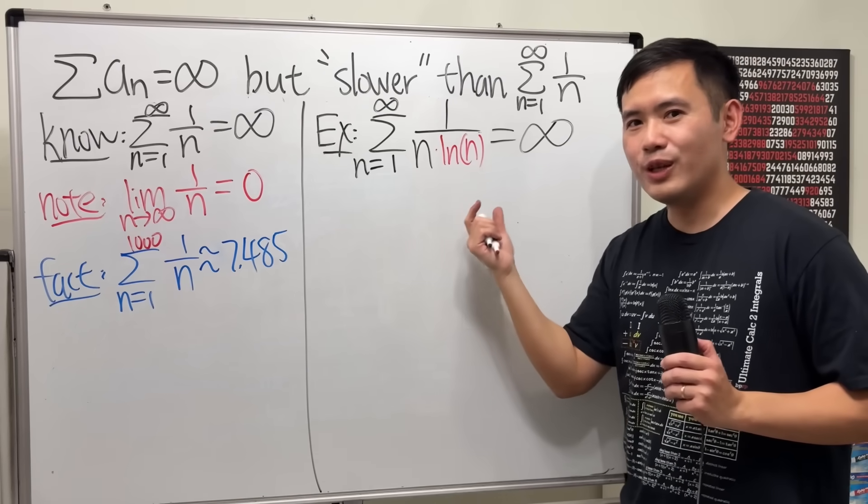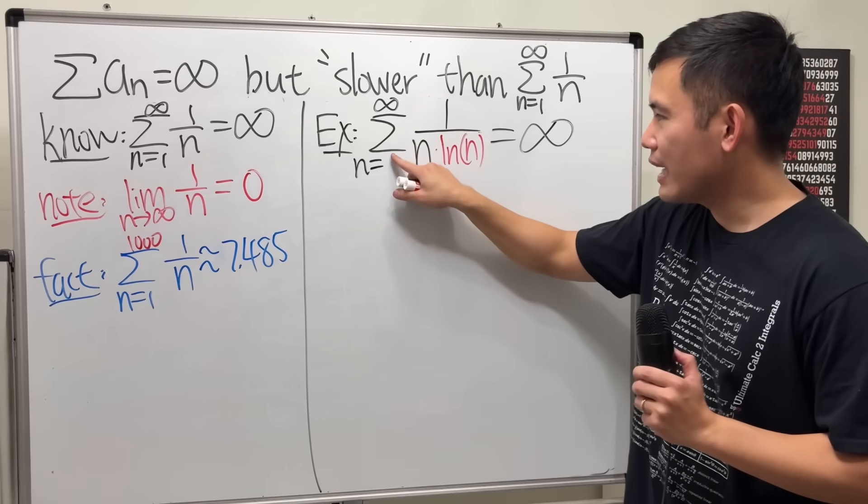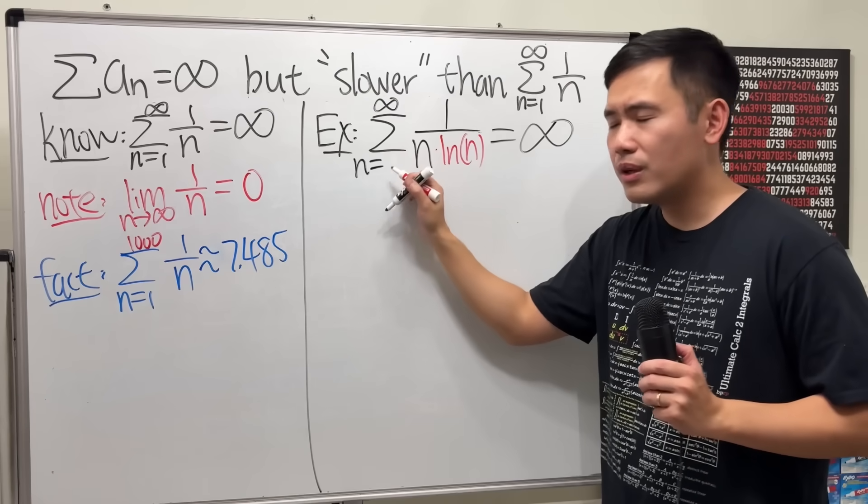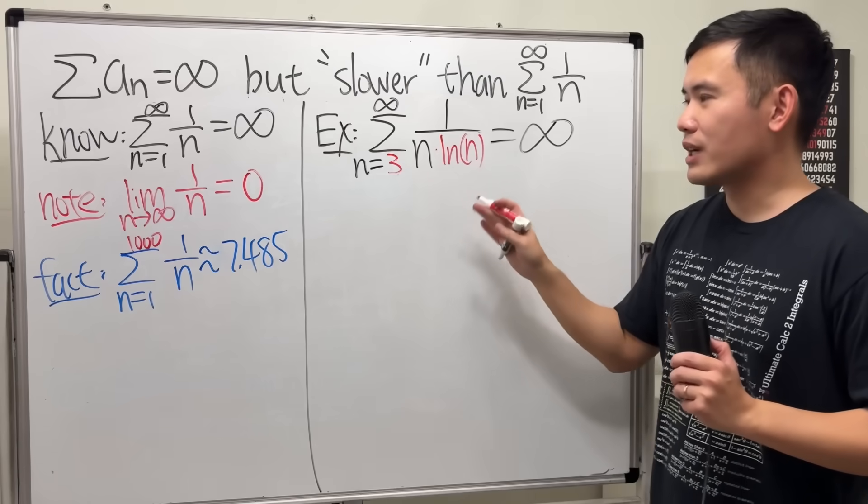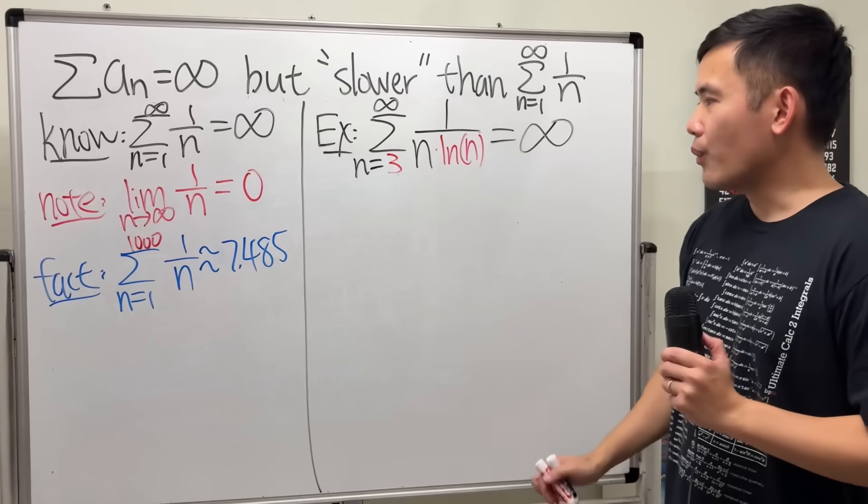But it's harder for us to do the integral test if we have ln n plus 1 right here. So I'm going to avoid that by making the n starting at not 2 but rather 3 because it's much better to do a comparison later like that. So is this legit? Yes.